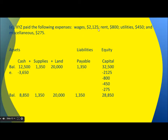XYZ paid the following expenses: rent $2,125, utilities $800, and miscellaneous $275 — totaling $3,650 in expenses. Since the company is paying expenses, we deduct $3,650 from cash on the asset side. These expenses also reduce owner's equity capital by the same amount. At the end of the day, the equation still balances: Assets = Liabilities + Equity.